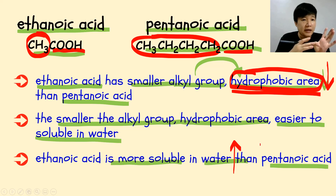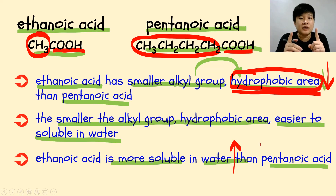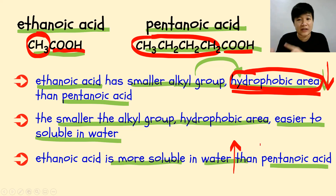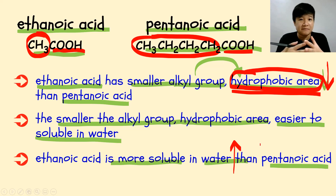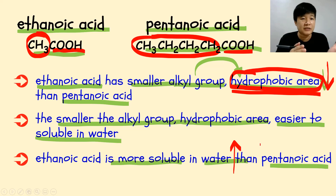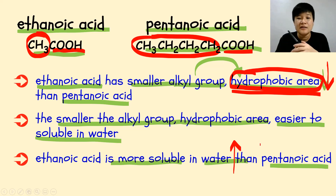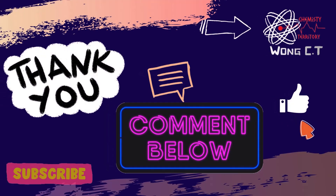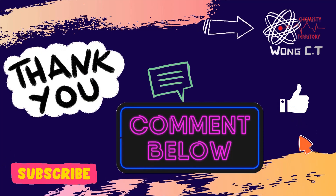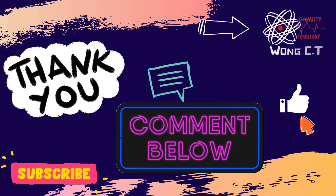Solubility is always about hydrophilic area and hydrophobic area — nothing more than these two. Make sure you identify which is your hydrophilic area and which is your hydrophobic area, and how they affect solubility. Remember, the solubility discussed here is solubility of carboxylic acid in water only. Like the video, drop questions in the comments, hit subscribe, and I'll see you in the next video!